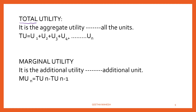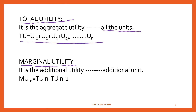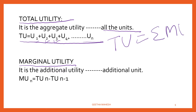Now let us discuss two important concepts: total utility and marginal utility. Total utility is the aggregate utility derived by a consumer by consuming all the units of a commodity. Total utility can be expressed as TU equals utility derived from the first unit plus utility derived from the second unit plus utility derived from the third unit and so on. Or you can write total utility as equal to the summation of marginal utility.